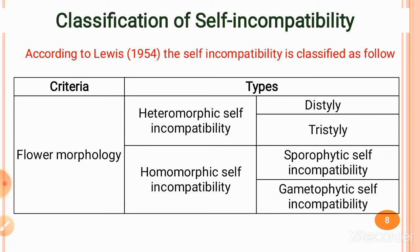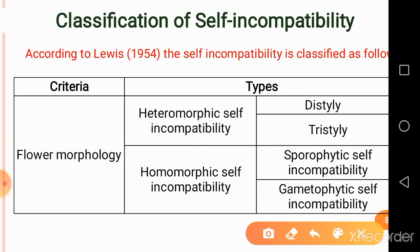The classification of self-incompatibility, given by scientist Lewis in 1954, is based on: flower morphology, genes involved, site of expression of the self-incompatibility reaction, and pollen cytology. On the basis of flower morphology, self-incompatibility is classified into two types: heteromorphic self-incompatibility and homomorphic self-incompatibility. Heteromorphic is further divided into distyly and tristyly, while homomorphic is divided into sporophytic and gametophytic self-incompatibility.